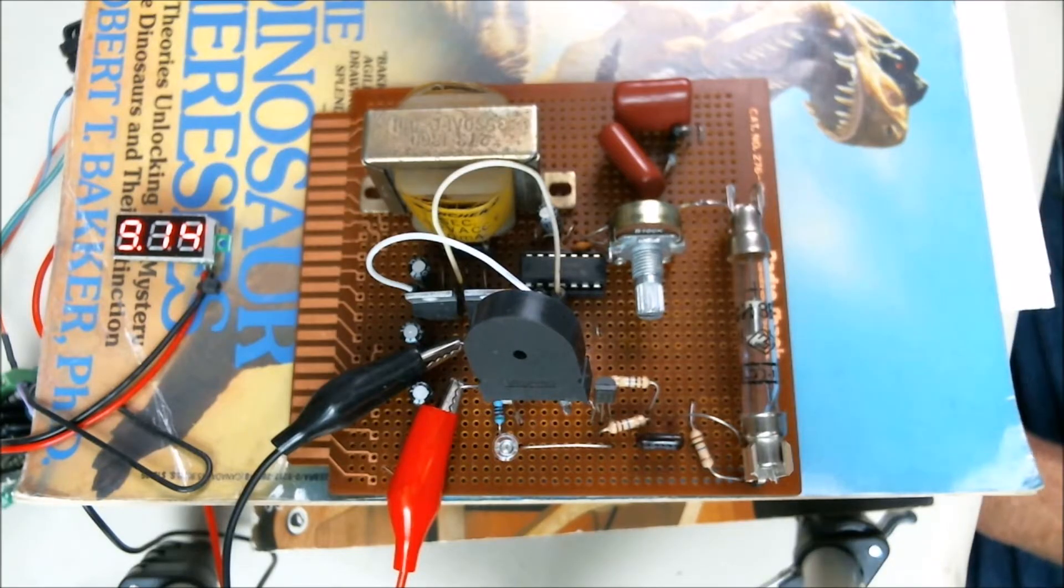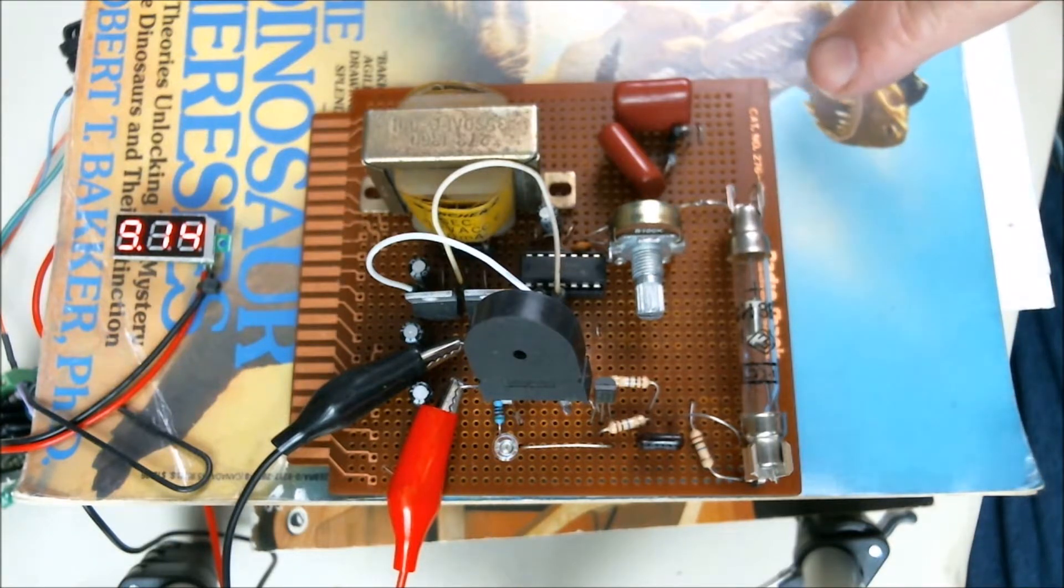All right, here's my Geiger counter board. It's powered up and it's producing, up here on the end, 460 volts.